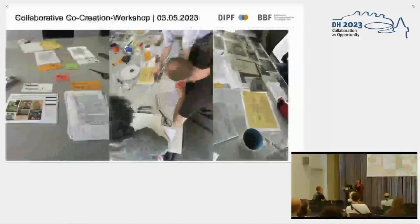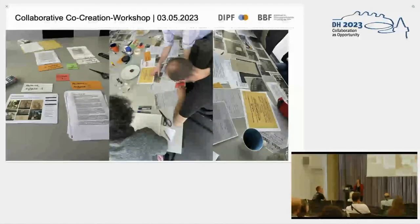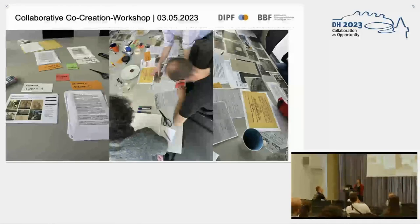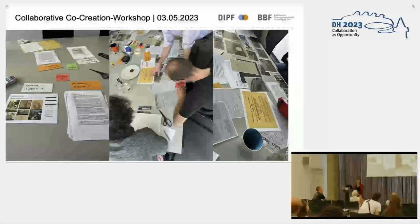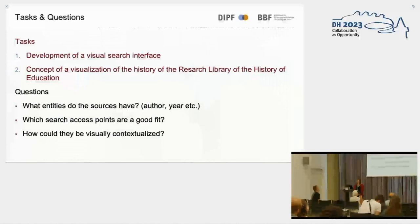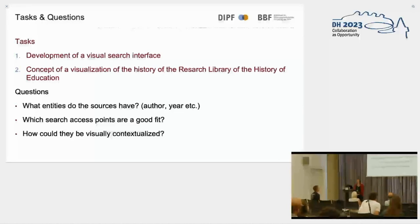Our project started with a co-creation workshop — referring to the conference's main topic. The aim was to bring together the research department and people from the infrastructure and library side to develop concepts for visualizations. There were two tasks: to develop a visual search interface, and to develop a concept for a visualization of the history of the research library for the history of education. The leading questions were: what entities do our sources have, which search access points are a good fit for our research, and how could they be visually contextualized in an interface.